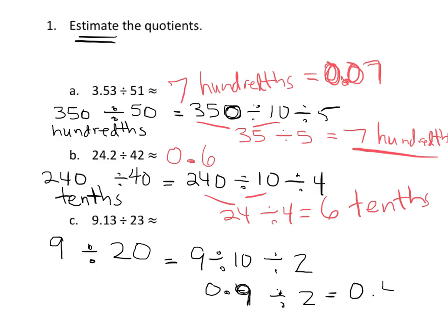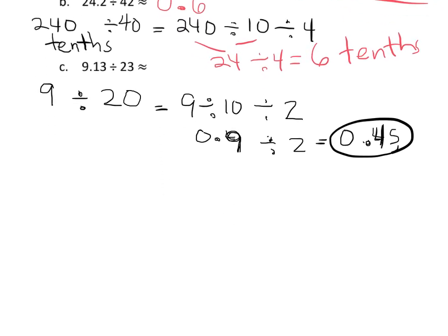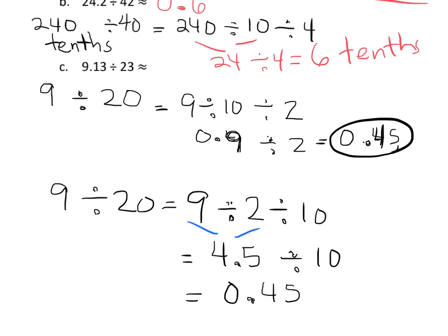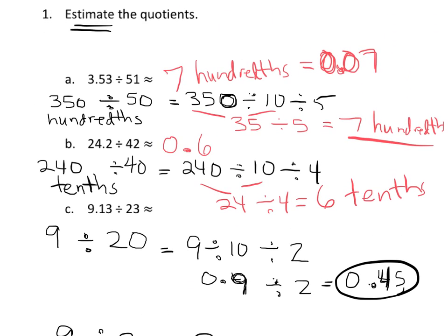Another way to think of it: 9 divided by 20 can be rewritten as 9 divided by 2, divided by 10 — using the commutative property. So 9 divided by 2 is 4.5, and 4.5 divided by 10 is 0.45, because each value shifts one space to the right, which makes the decimal appear to shift one space to the left. That's our estimation.